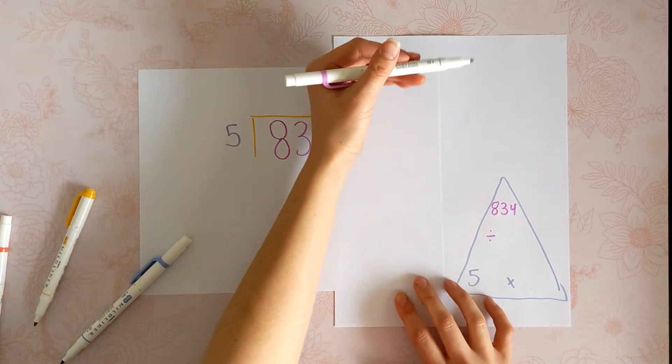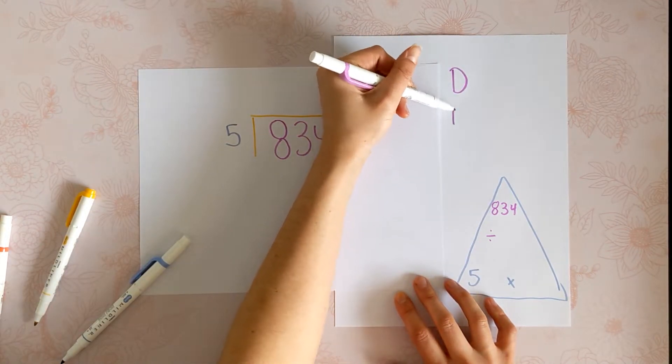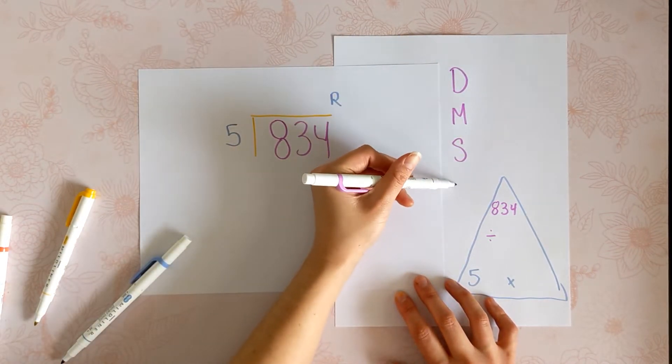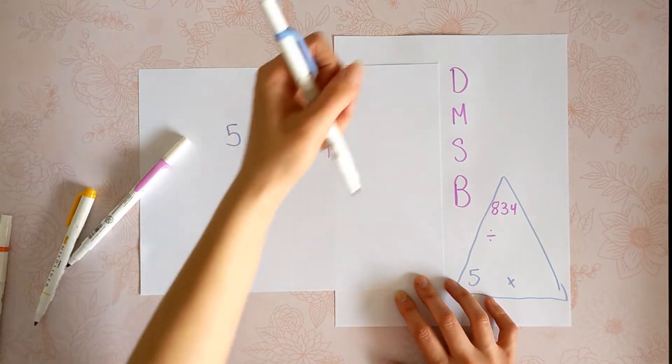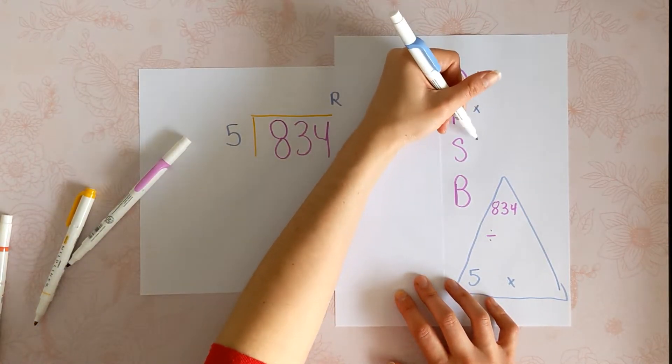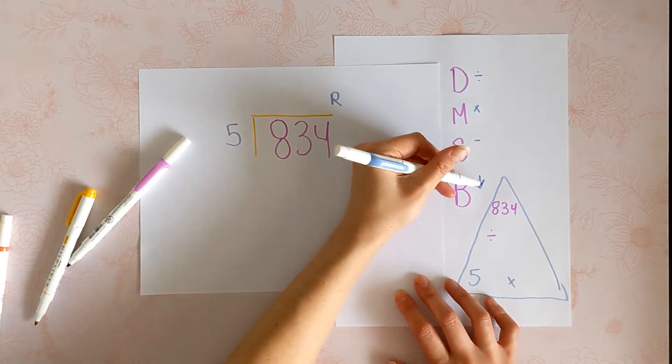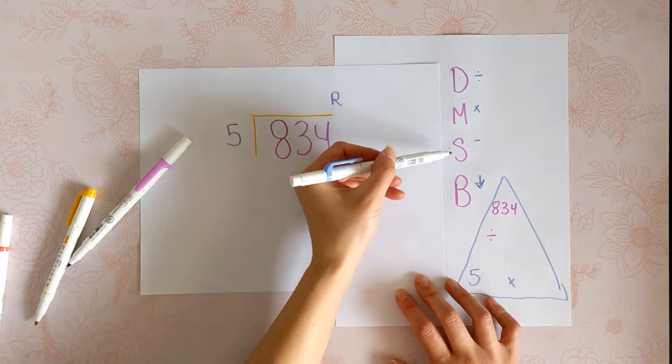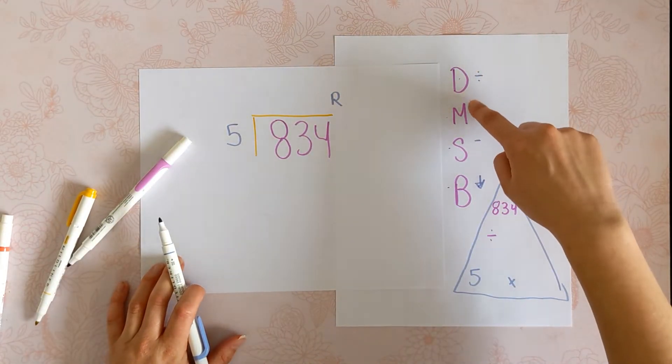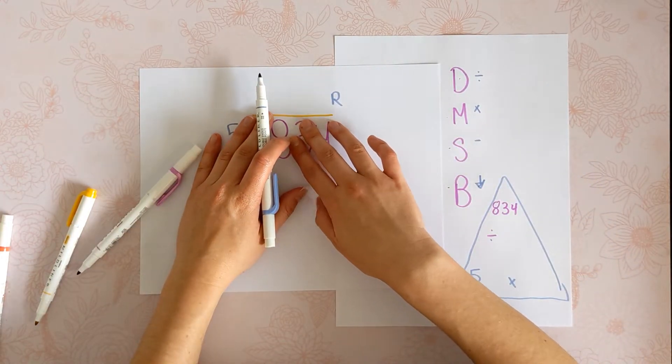Okay, let's go ahead and get started. We're going to use a standard algorithm. D, M, S, B: divide, multiply, subtract, bring down. And the way that I remember this acronym is, does McDonald's sell burgers? And we do one step at a time using the last number that we touched.